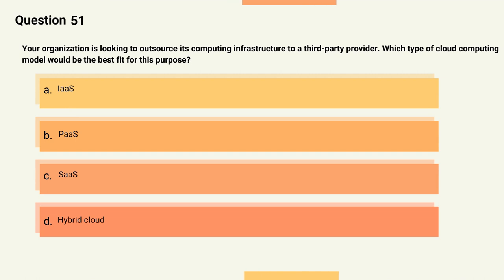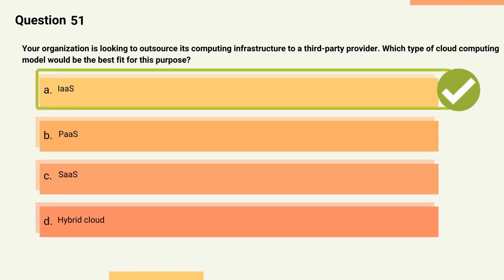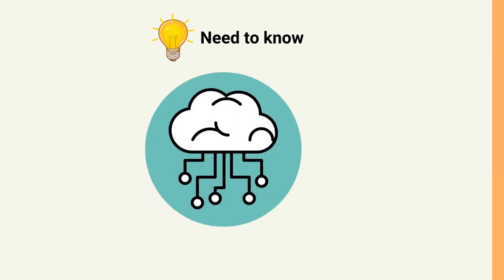Question 51: Your organization is looking to outsource its computing infrastructure to a third-party provider. Which type of cloud computing model would be the best fit? Options: A) IaaS, B) PaaS, C) SaaS, D) Hybrid cloud. The correct answer is Option A, IaaS. Explanation: IaaS (Infrastructure as a Service) provides the core computing, storage, and network hardware and software upon which organizations build and deploy applications. It is popular in the data center and is usually billed based on usage.